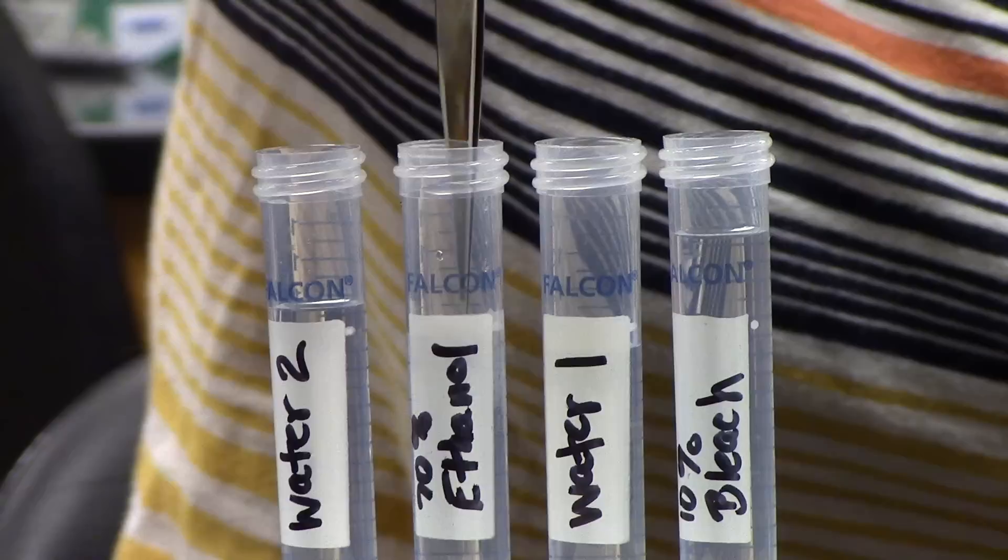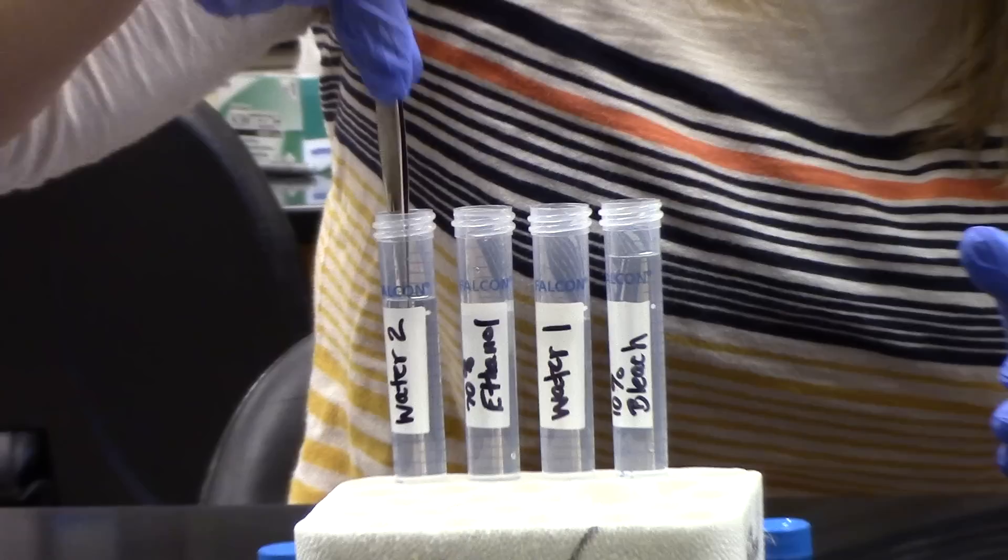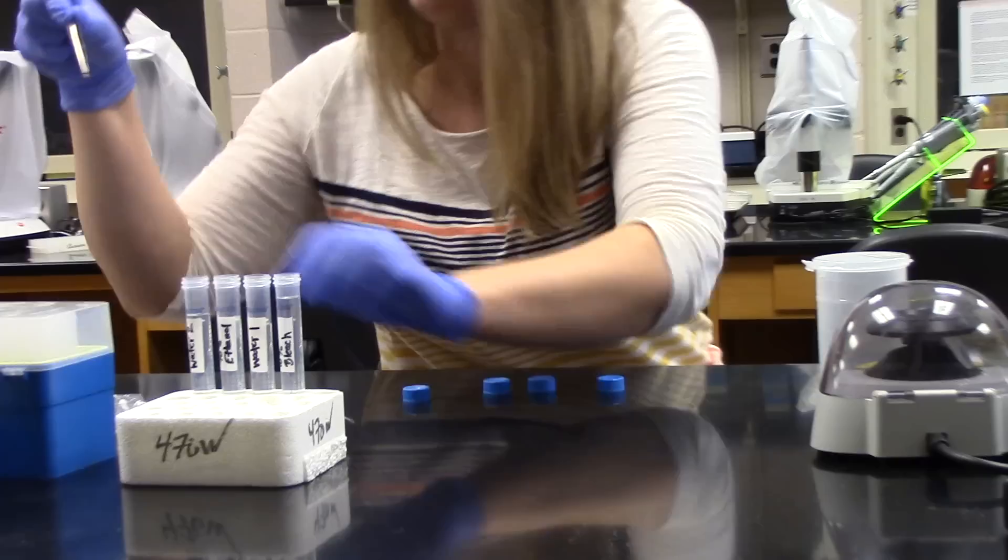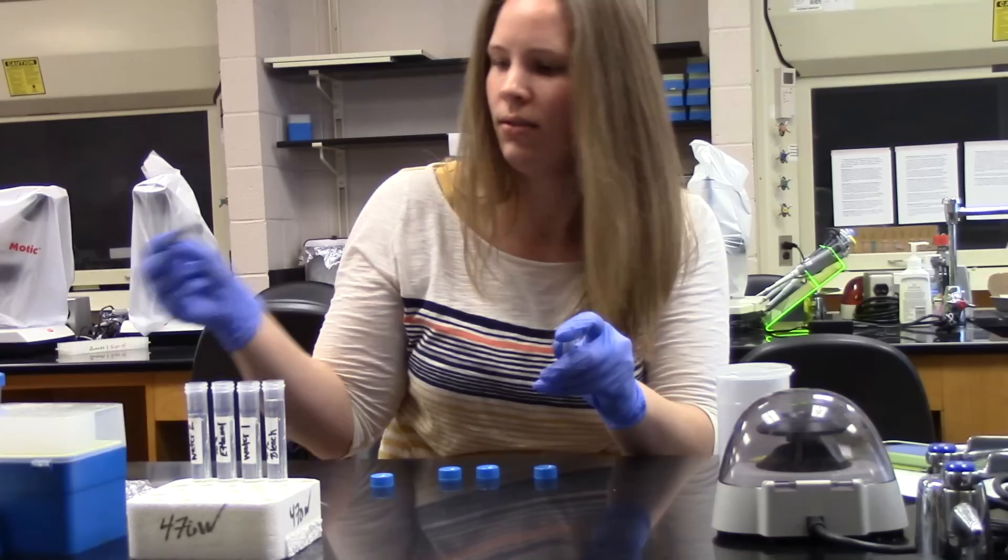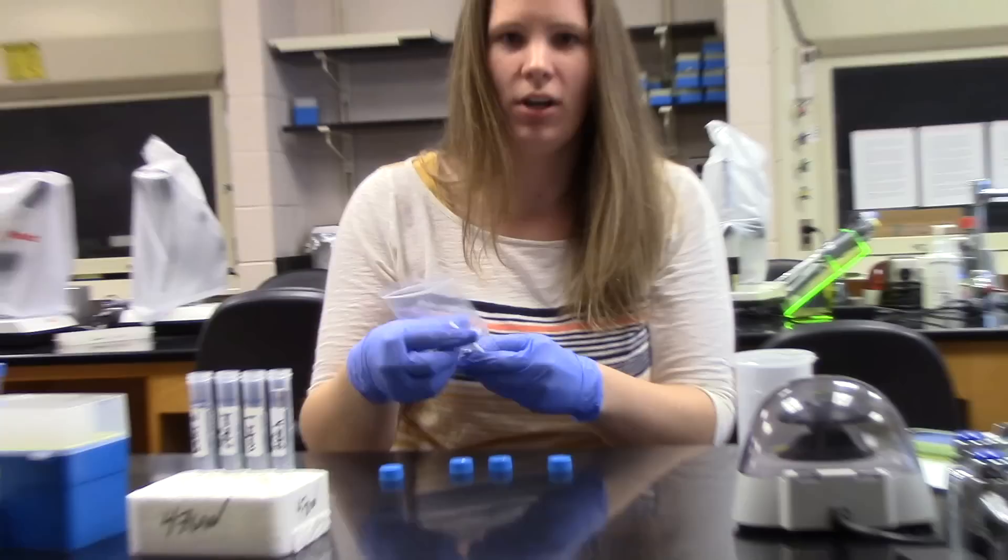Now our beetle is sterilized, and we can add it to the microcentrifuge tube containing saline. Now in the tube we want to crush the beetle. It's not necessary to pulverize the beetle completely.